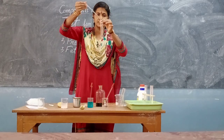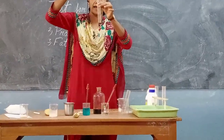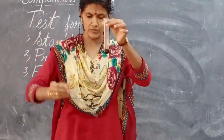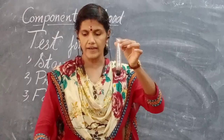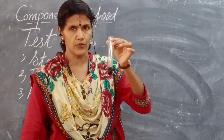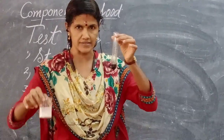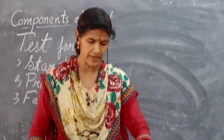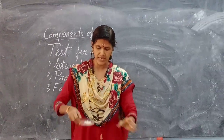See how it is changing into blue-black color. So it shows that when we add iodine solution in this starch, it becomes blue-black color.